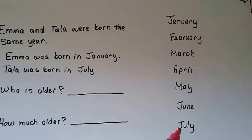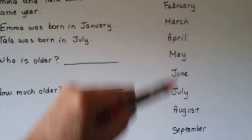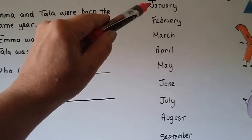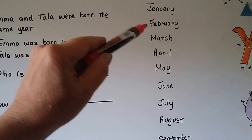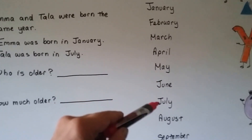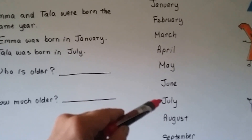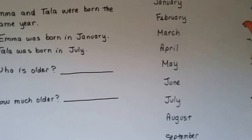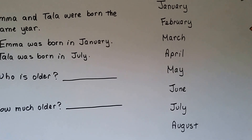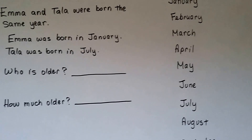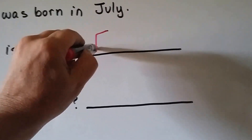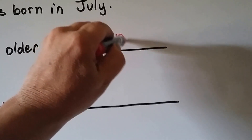And July is way down here. If they were born in the same year and Emma was born in January, then one, two, three, four, five, six months went by before July. Well, January is first — it comes before July. So Emma is older, because January comes before July and she was born before Tala.